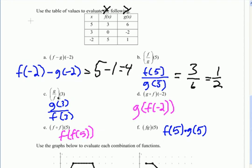On c, we're dividing. So we're doing g(3) divided by f(3). g(3) is going to be -2. And f(3) is going to be 0. Now we can't divide by 0. So we would say that this doesn't exist. It's undefined. Or we could say it's no solution.